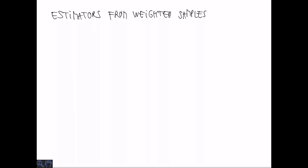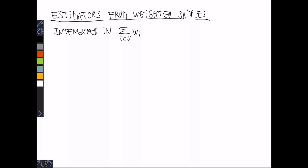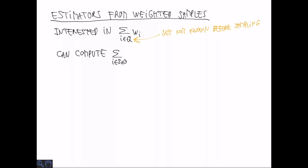When we do weighted random sampling, we are often interested in computing some function of the weights. The simplest case here is when we are interested in the sum over some set of items of the weights. And it's important to stress this set is not known before sampling, so we cannot really adjust the sampling procedure based on the knowledge of the set. Let's call this set Q. One thing that we can do from the sample is to compute the sum of weights of those elements we have actually sampled. So in order to get an estimator of every item, the sum of weights of all items in Q, including the ones we haven't sampled, we can use the estimator mu hat, which is simply the sum of the sample weights divided by the sampling probabilities.